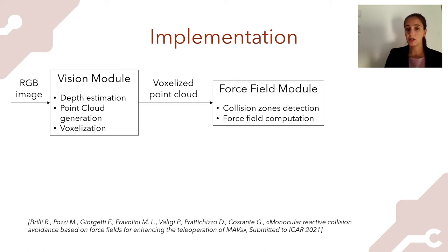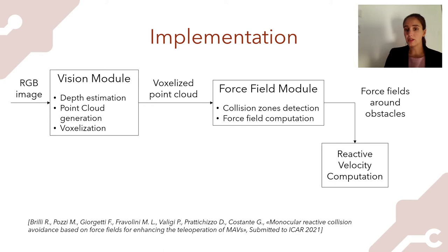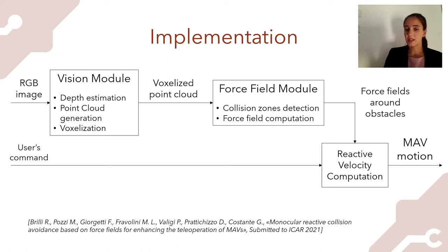The output of this module is fed to the reactive velocity computation module, which also takes into account the user's command and then generates the MAV motion. If no obstacle is detected, the user's command is given to the MAV directly; otherwise, if an obstacle is detected, a reactive velocity is computed so that the MAV can avoid the obstacle.